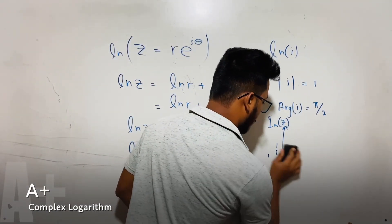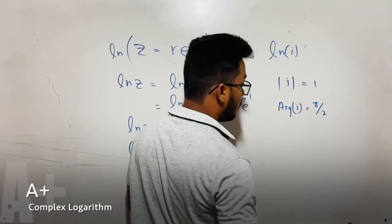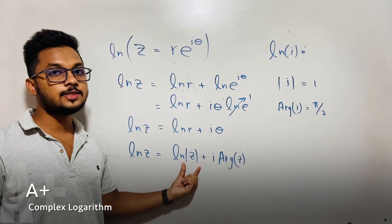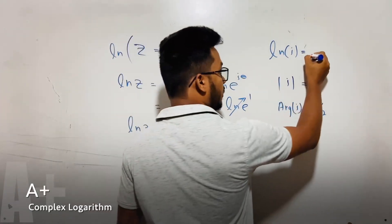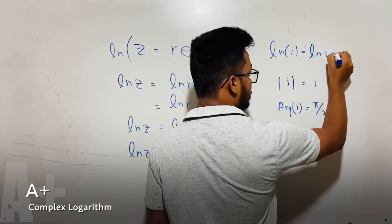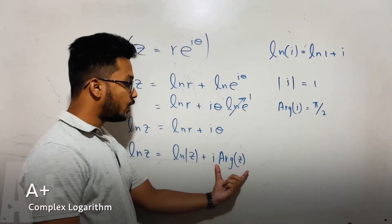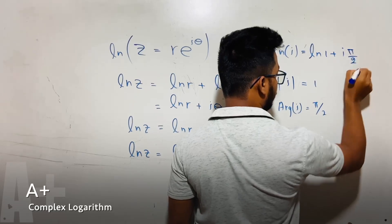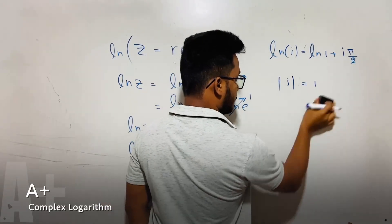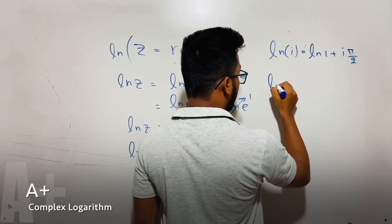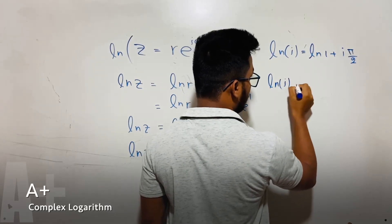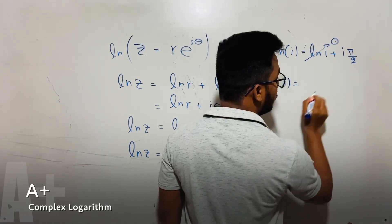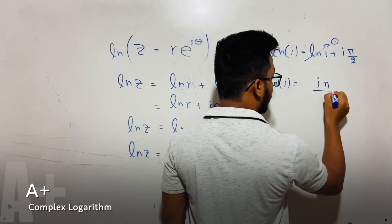Now I can write ln i equals ln modulus of z, ln 1, plus i argument of z equals π by 2. Okay, I will erase this, and we're left with ln i equals ln 1, which equals 0, so we get i π by 2.